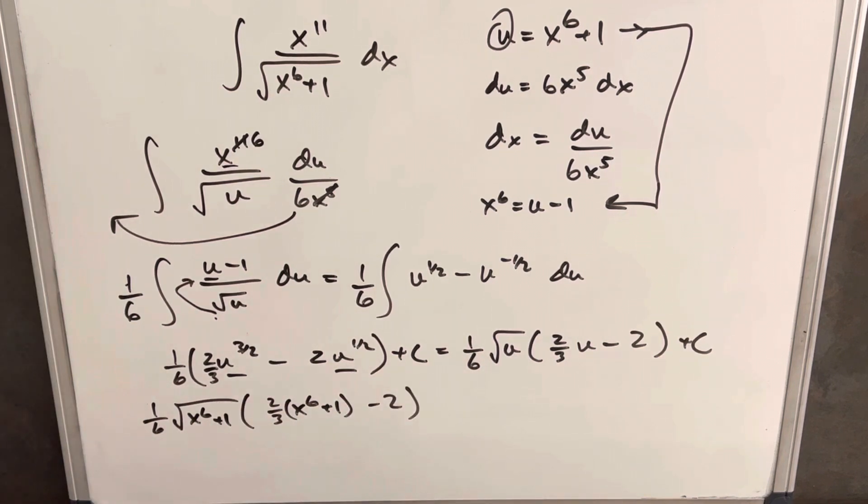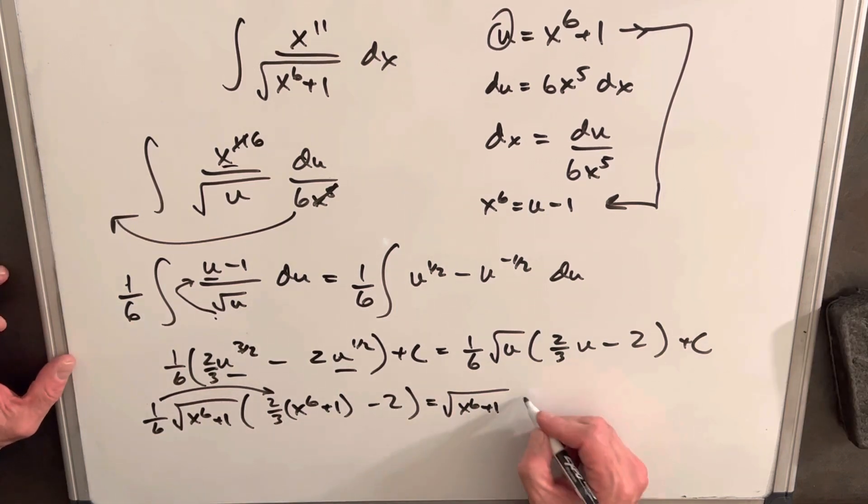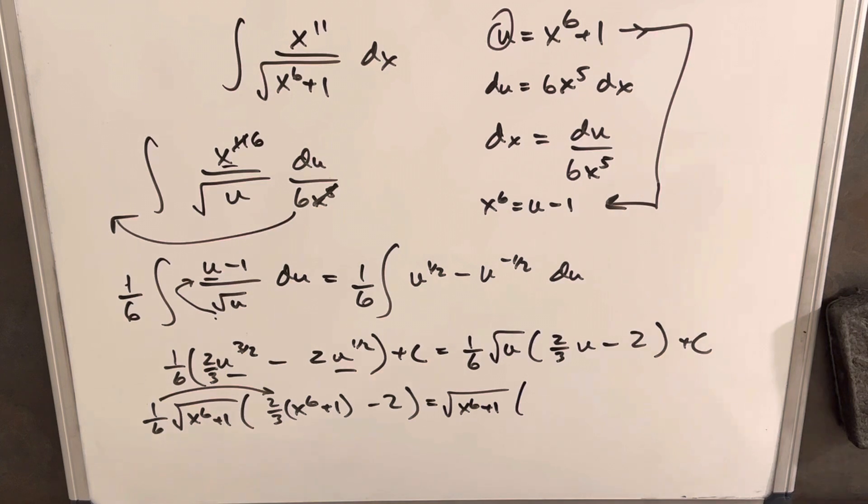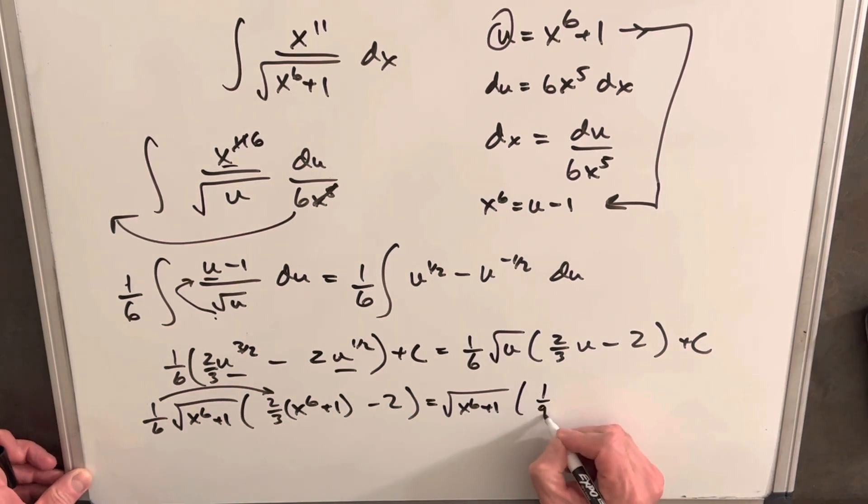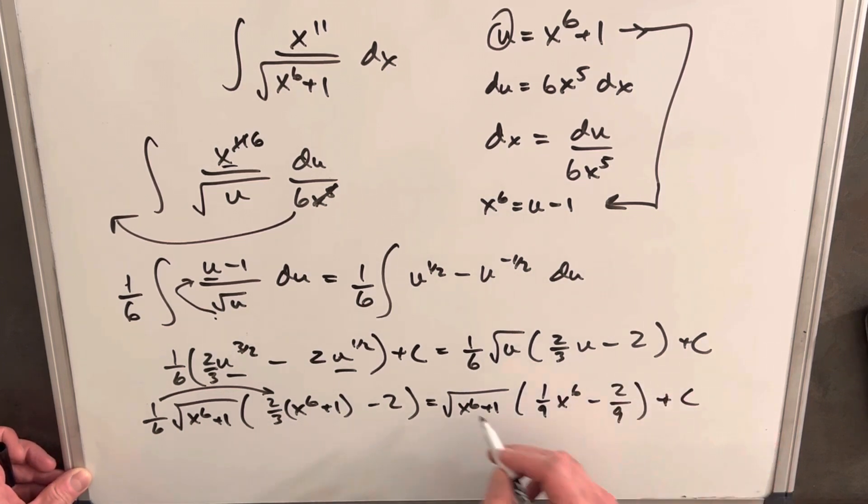Then we can just do a little bit of final simplification. I think I'm going to bring this 1 6th back in here. So we're going to have our square root of x to the 6th plus 1 up front. Then just distributing that and simplifying it, we're going to come up with our final solution. We're going to have 1 9th x to the 6th here, minus 2 9ths, plus c, and we're done.